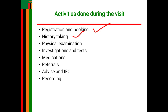Among the components of history taking, the first is social or personal history. Here you ask the name of the client for identification purposes and to build the nurse-patient relationship. You then move on to ask the age of the client.